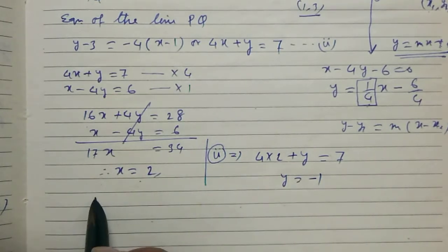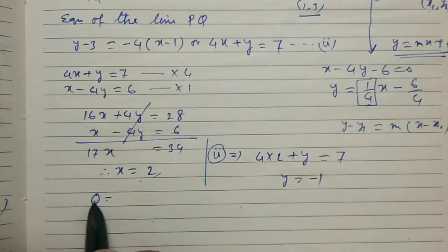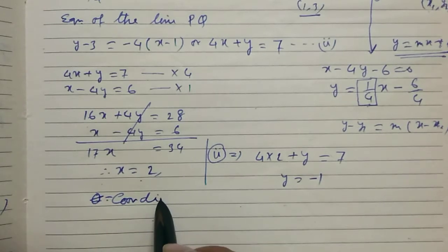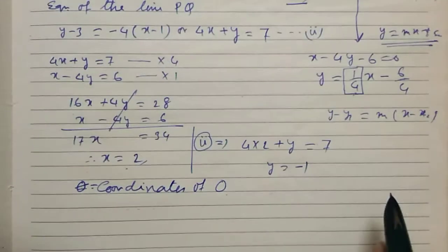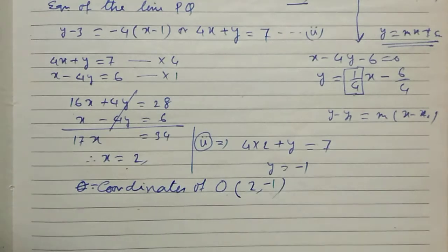Hence, the coordinates of O, that is the foot of the perpendicular, equals (2, -1).